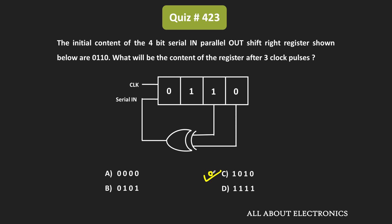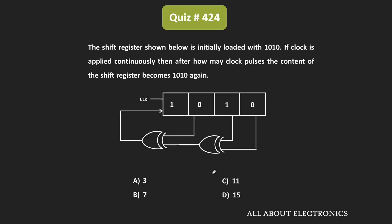Now let us move to the next question. This question is similar to the previous one, but with a little modification. Once again, this is the serial-in parallel-out type of shift register, and a couple of outputs are XORed using XOR gates. The output of the XOR gate is again given to the serial input. The register is initially loaded with 1010, and we have been asked to find after how many clock pulses the content will once again become 1010.